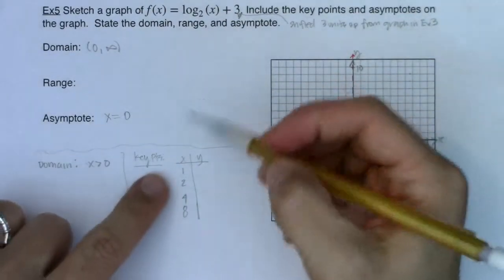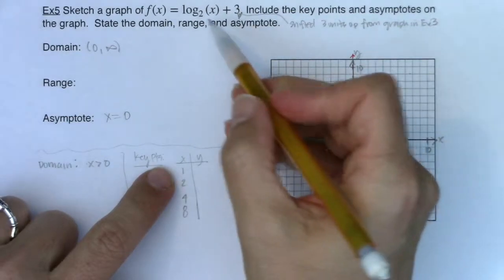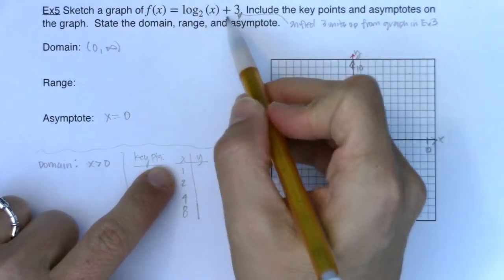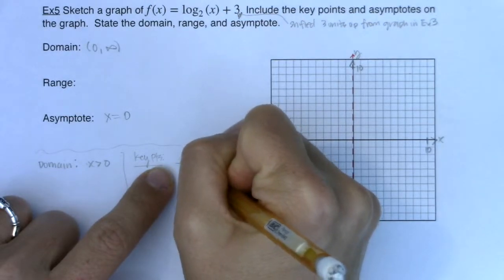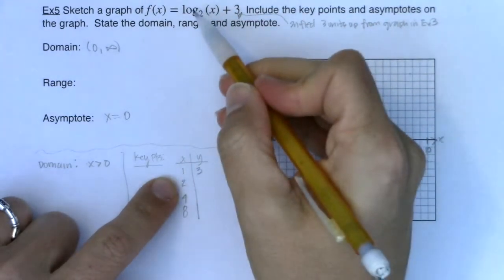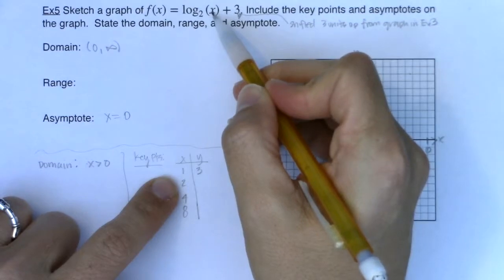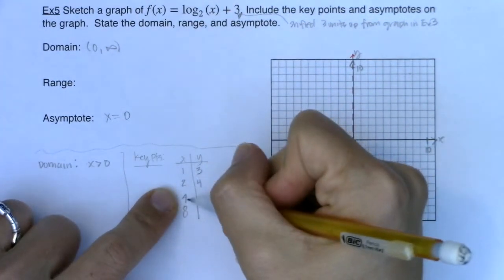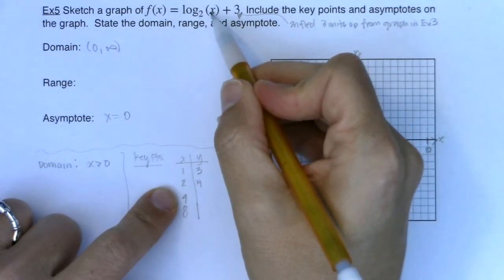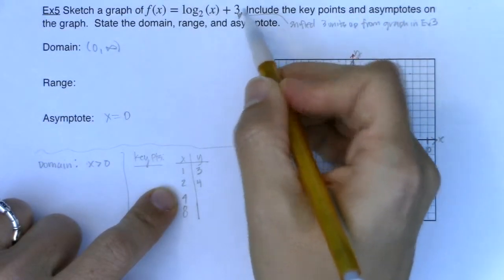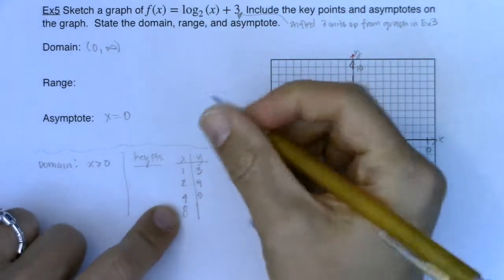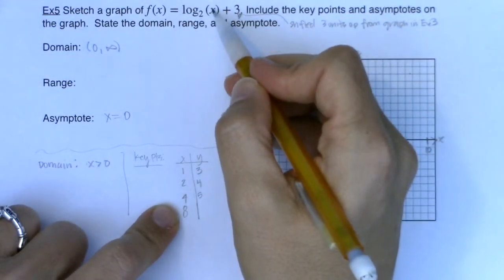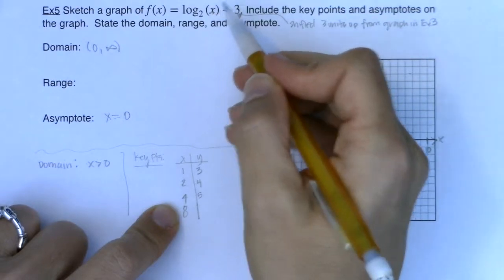If I plug 1 in, log base 2 of 1 is 0, 0 plus 3 is 3. If I plug 2 in, log base 2 of 2 is 1, 1 plus 3 is 4. If I plug 4 in, log base 2 of 4 is 2, 2 plus 3 is 5. If I plug 8 in, log base 2 of 8 is 3, 3 plus 3 is 6.